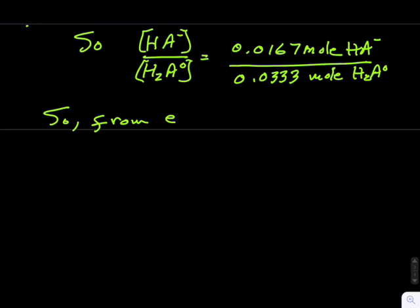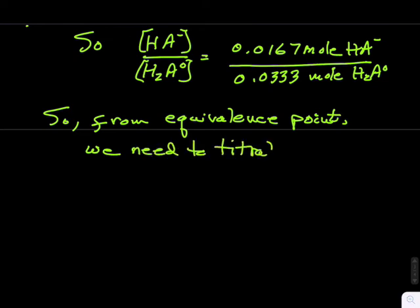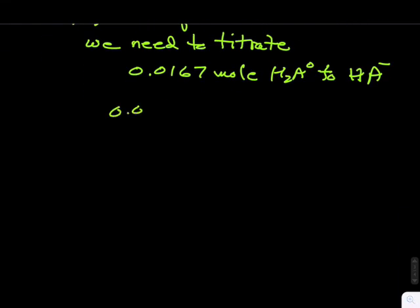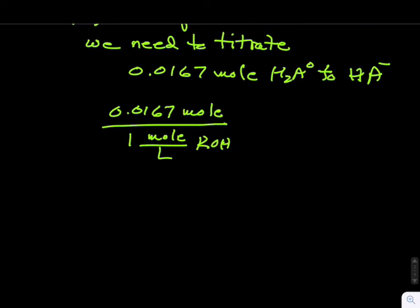This means that to reach pH 8.0, we must titrate 0.0167 mol of H2A zero to HA minus. So we can write 0.0167 mol divided by 1 mol per liter of KOH and obtain 16.7 milliliters of KOH to be added to the solution.